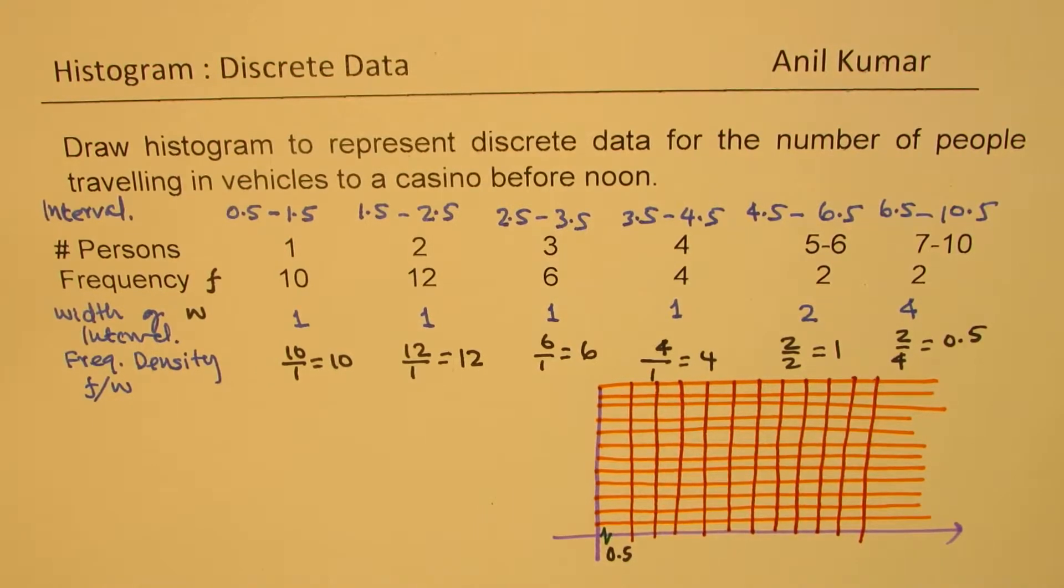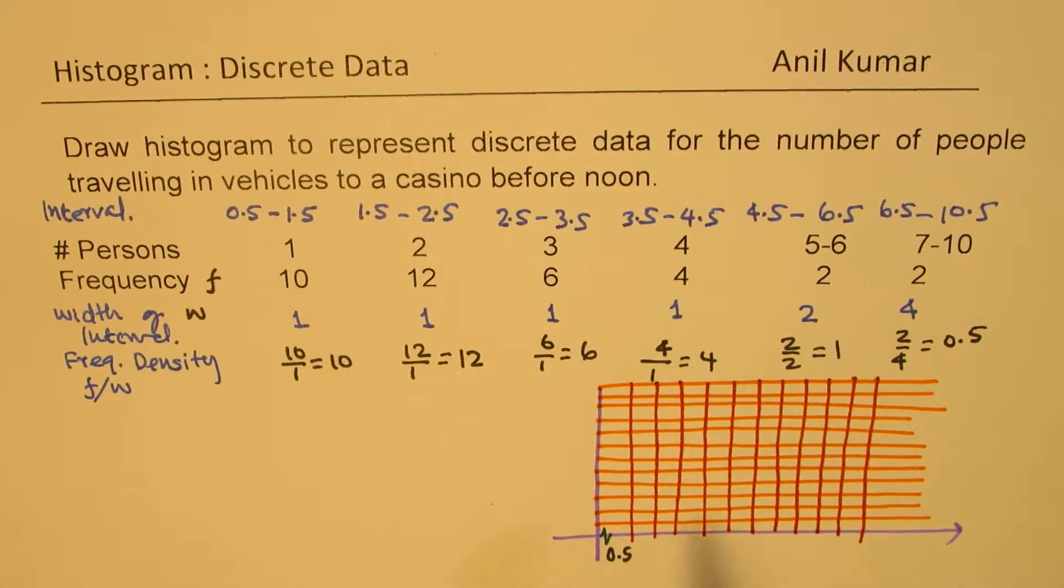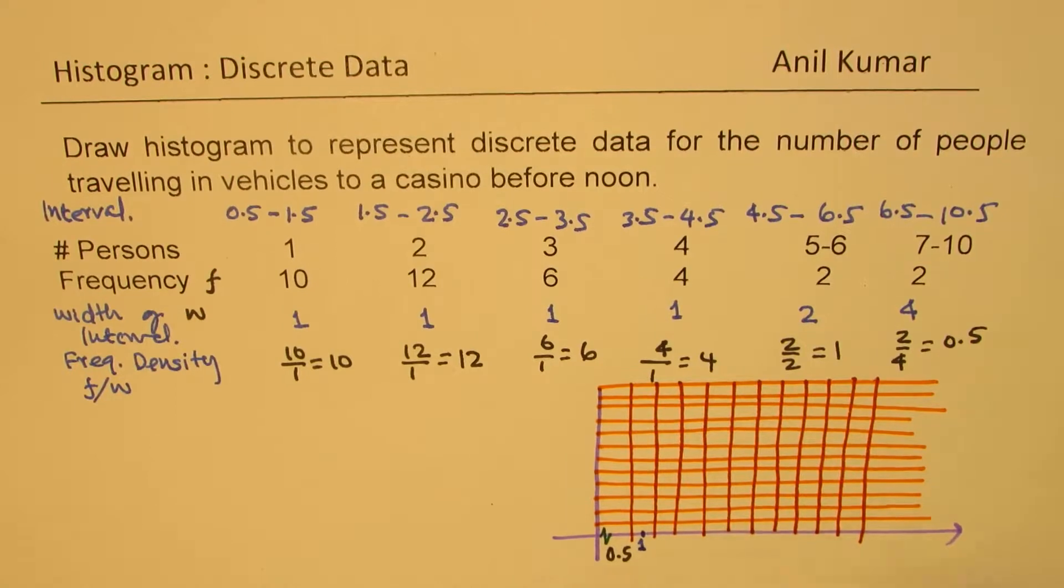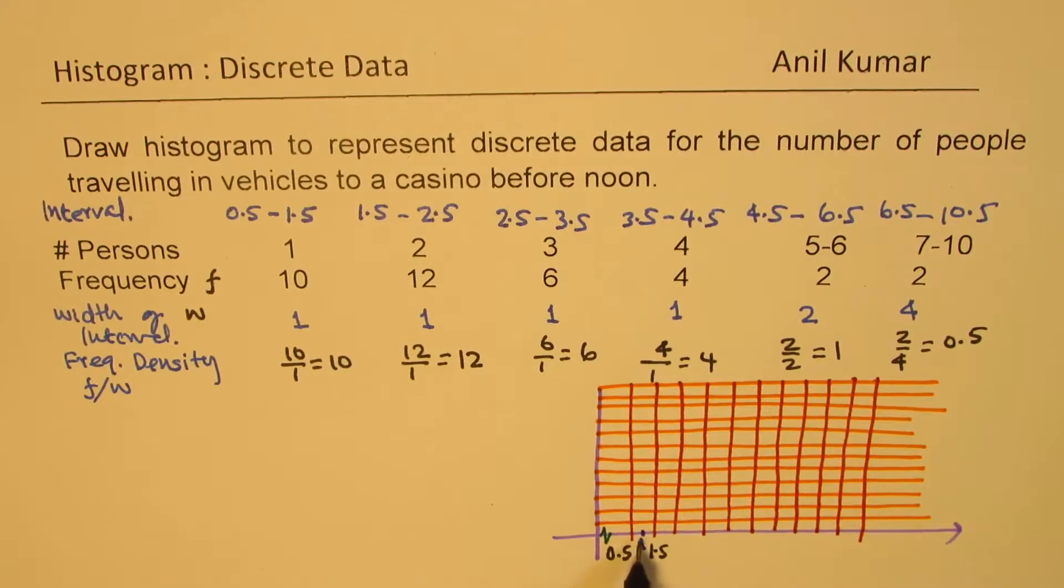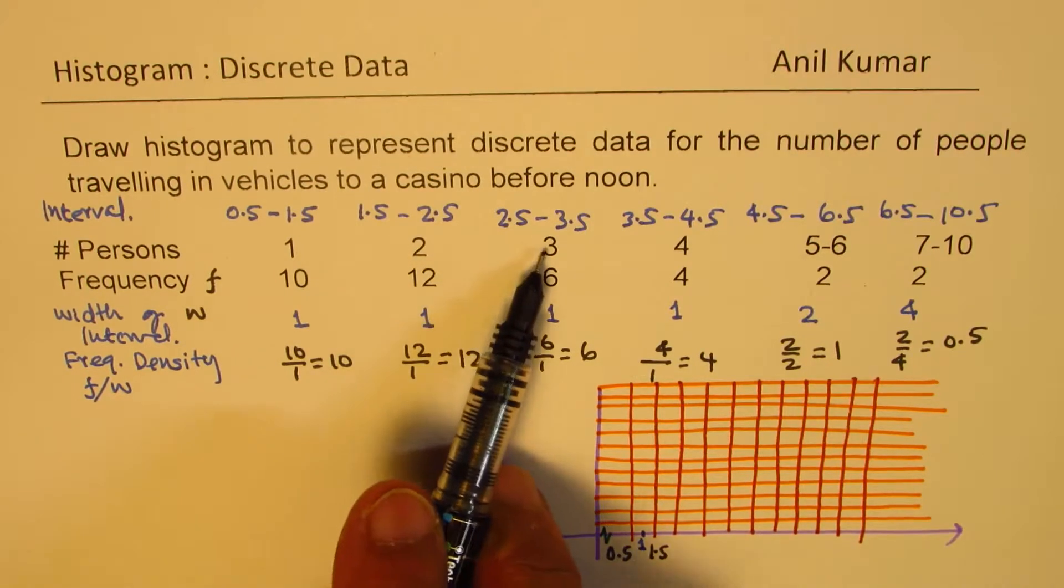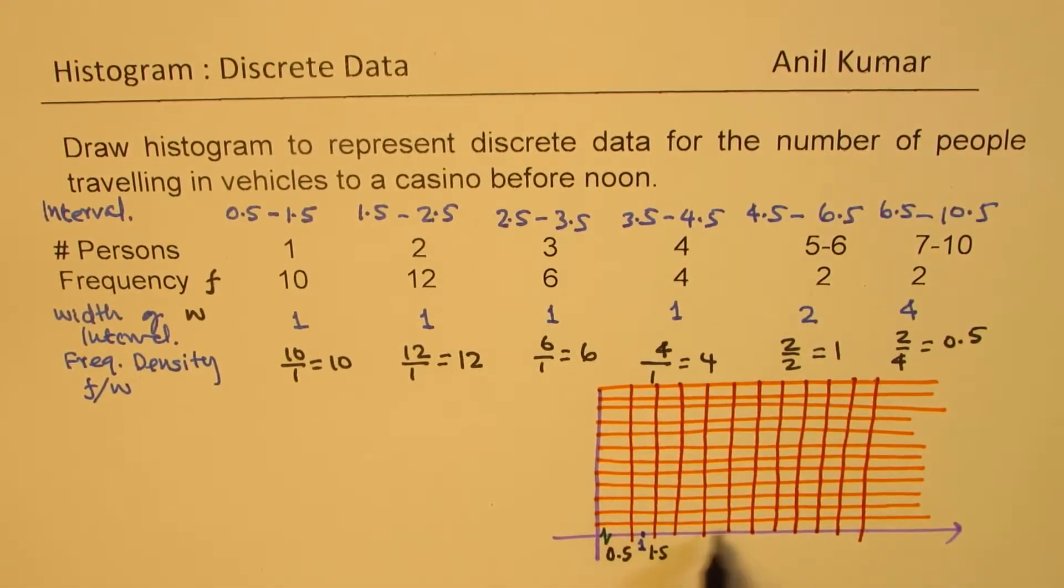2, 3, 4, 5, 6, 7, 8, 9, 10. So see here, from 0.5 to 1.5, so what we have here is this is 0.5 and that is 1.5. So in between we have 1, do you get an idea? So this place here is 1.5.